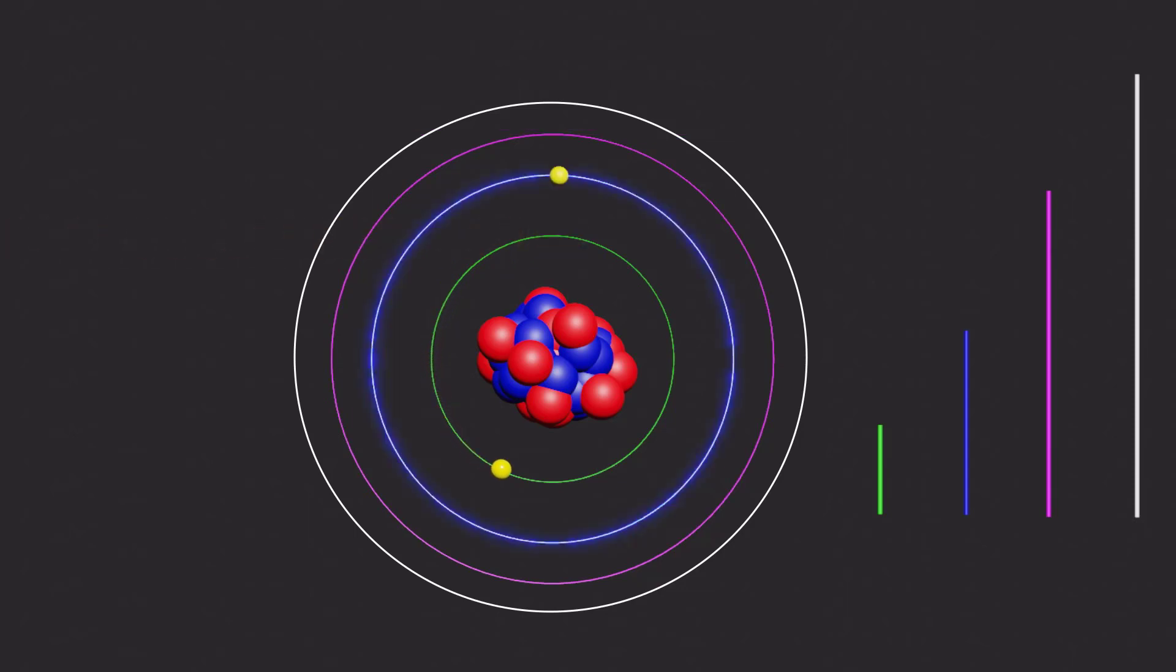Electrons absorb energy when they jump from a low energy level to a high one, and emit energy when they jump from a high to a low energy level. The energy absorbed or emitted is equal to the difference in energy between the two levels, E = E₂ - E₁.